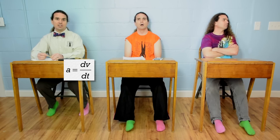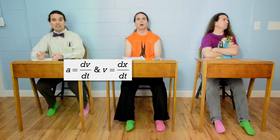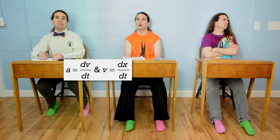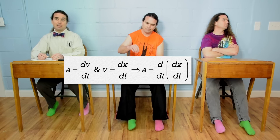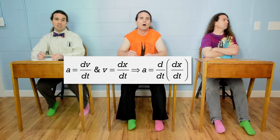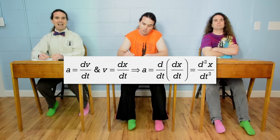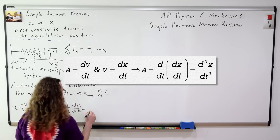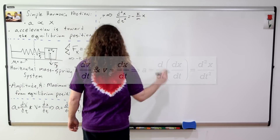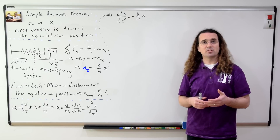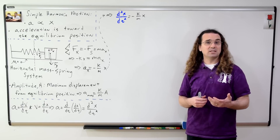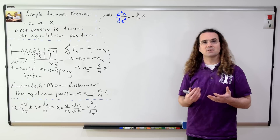We know instantaneous acceleration equals the derivative of velocity as a function of time, and instantaneous velocity equals the derivative of position as a function of time. That means acceleration equals the second derivative of position with respect to time. Then we can replace the acceleration in the previous equation for a mass-spring system with the second derivative of position with respect to time.